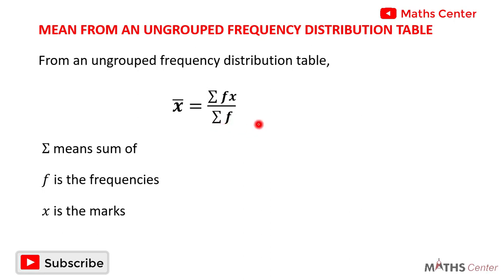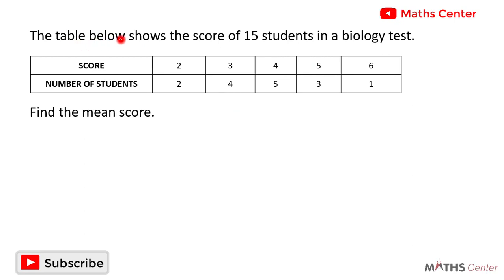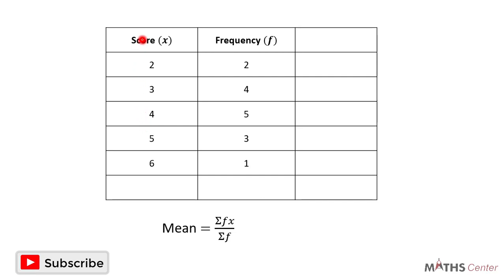Let's apply this to a question. The table below shows the scores of 15 students in a biology test. We have the scores and the number of students who scored each one. Find the mean score. To do this we will draw a table with three columns: the first column for the scores (the x values), the second for the frequencies (the f values), and the third column for fx.